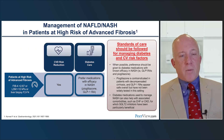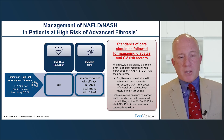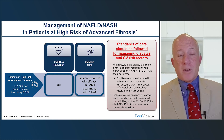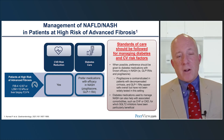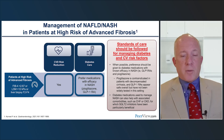Even as hepatologists manage liver-specific treatments, primary care must still address cardiovascular risk reduction — it remains the number one cause of death. For diabetes-specific care, targeted therapy including pioglitazone and a GLP-1 receptor agonist is recommended for patients with NASH and type 2 diabetes.